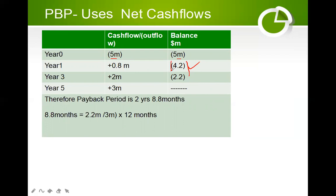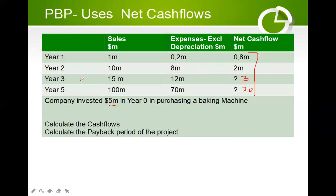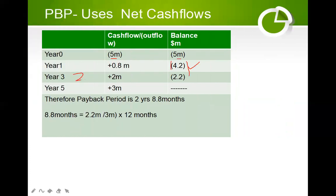Out of the 4.2 million, in year two we received 2 million. Taking 4.2 million minus 2 million gives us 2.2 million — this is our balance yet to be recovered. Remember, payback period is the number of years required by the net cash flows to recover the initial investment, which is our year zero investment. We still have 2.2 million remaining at the end of year two.